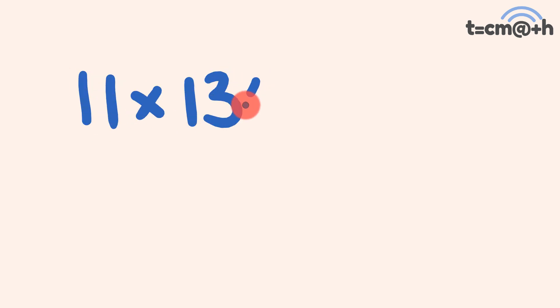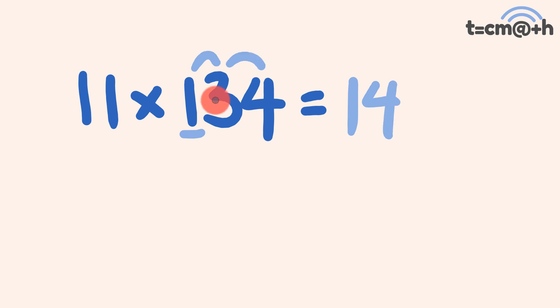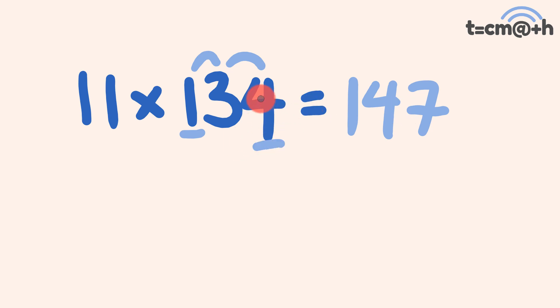The first trick is multiplying by 11. Say for instance, 11 multiplied by 134. The first digit, we just put the first digit down — it's a 1. The next digit, we add these two: 1 plus 3 is equal to 4. The next digit, 3 plus 4 is equal to 7. And the last digit, we just write down the last digit, which is a 4. Our answer: 1474.